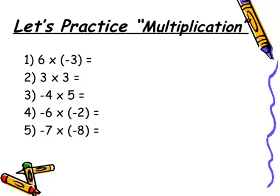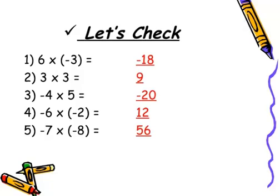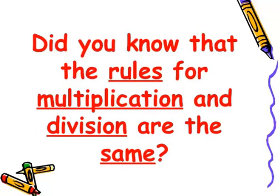Let's practice multiplication. 6 multiplied by minus 3 equals minus 18 — if one value is negative the answer is negative. If both values are negative, the answer is positive. For example, minus 6 multiplied by minus 2 equals positive 12. Similarly, minus 7 multiplied by minus 8 equals positive 56.